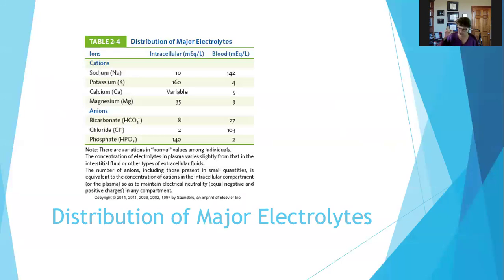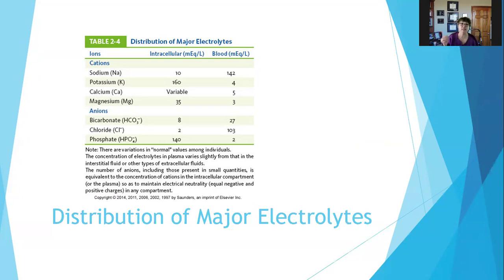Sodium is the primary extracellular cation — cations are the positively charged ones. Potassium is the primary intracellular cation. So there's a lot of sodium in the blood and in the extracellular fluids and not as much potassium, and there's a lot of potassium inside the cell and not as much sodium.